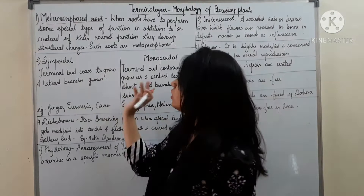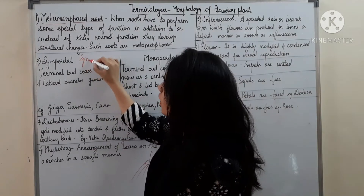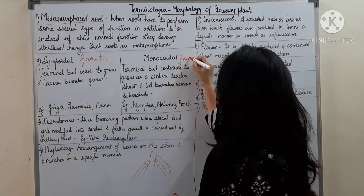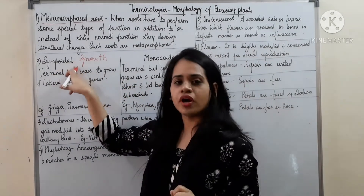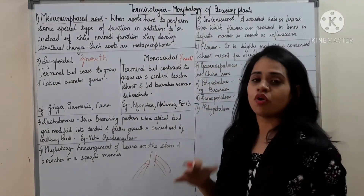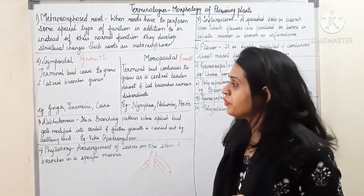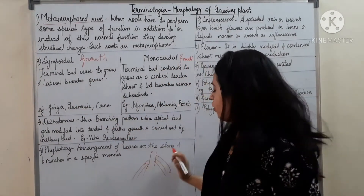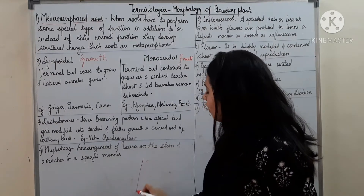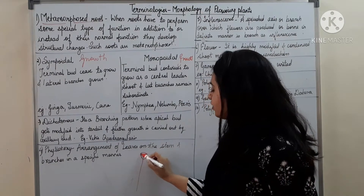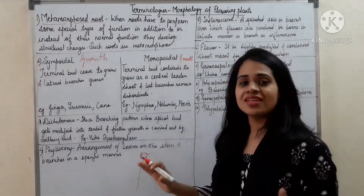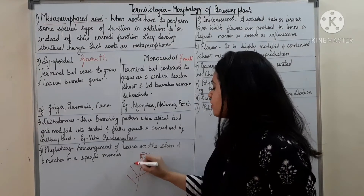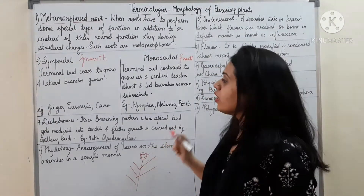There are two types of growth: sympodial growth and monopodial growth. In sympodial growth, the terminal part ceases to grow and lateral branches grow. So the terminal region — the uppermost region — will cease to grow, and growth will happen laterally. That is called sympodial.